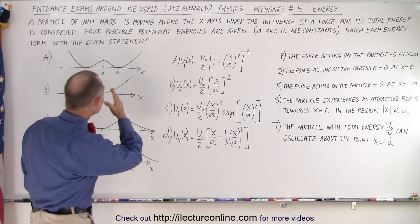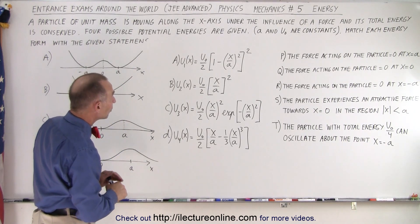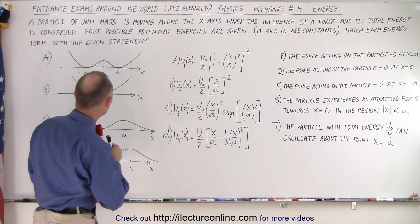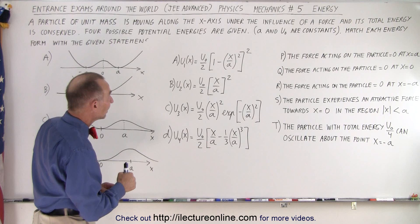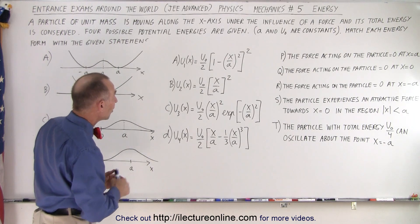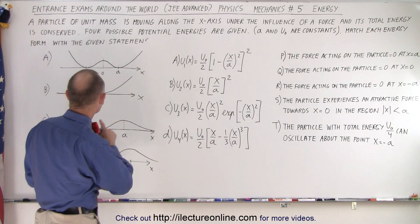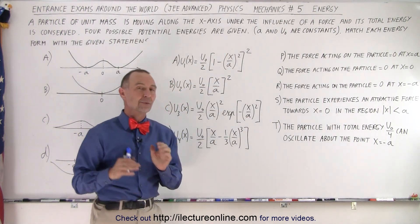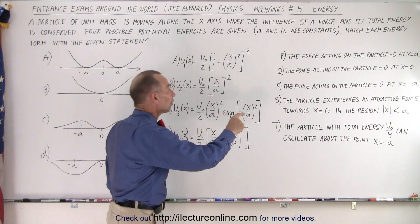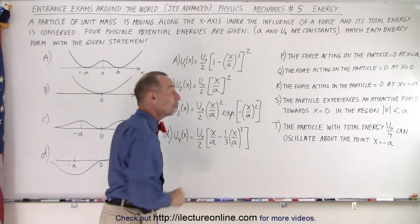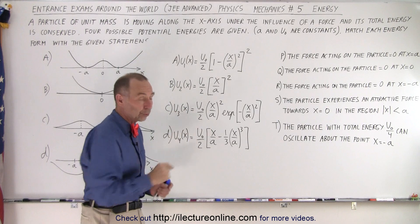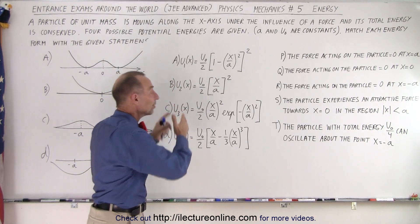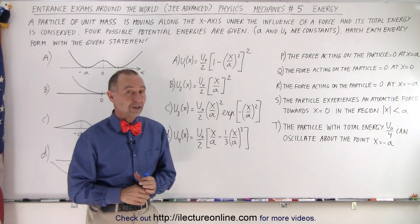A particle of unit mass is moving along the x-axis under the influence of a force, and its total energy is conserved. Four possible potential energies are given, where a and u sub nought are constants. We need to match each energy form with the given statements. We're given five specific statements, and we need to figure out which of those five are appropriate for each of the four equations — it's not a one-to-one correspondence.